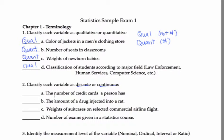Number of credit cards a person has. Number of. You only have one credit card or two credit cards or three credit cards. That's discrete. The amount of drug injected into a rat. That's continuous. That could be 2.3 grams or something. Weights of suitcases selected on a commercial airline flight. Continuous. Weights could be 38.5 pounds.